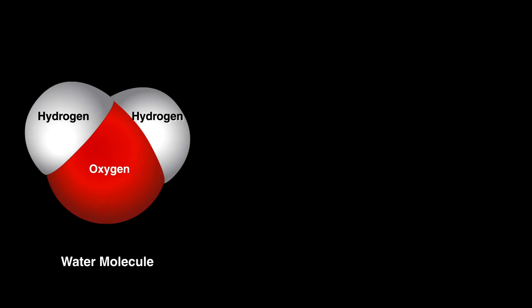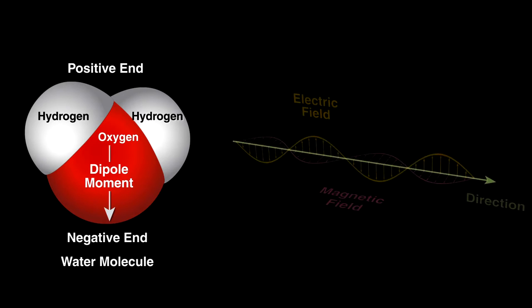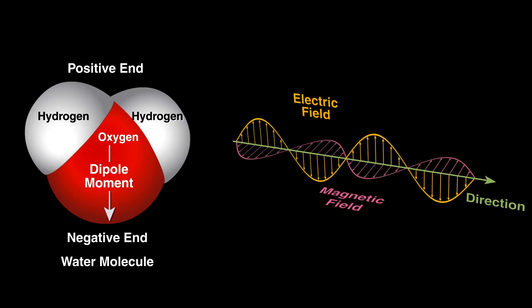Well, our food is filled with water, which is positively charged at one end and negative at the other. To give these molecules more energy, we expose it to electromagnetic waves that emanate from the tube.